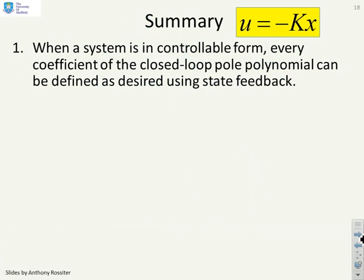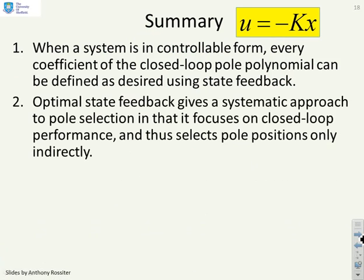So a summary: when a system is in controllable form, every coefficient of the closed-loop pole polynomial can be defined as desired using state feedback. Optimal state feedback gives you a more systematic approach to pole selection in that it focuses on the closed-loop performance and selects the pole positions indirectly rather than directly.